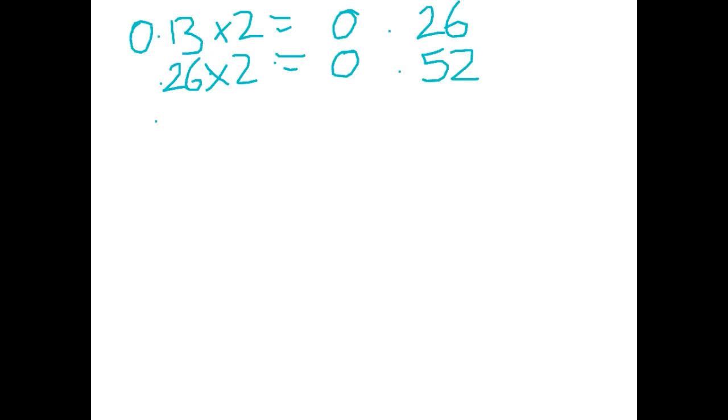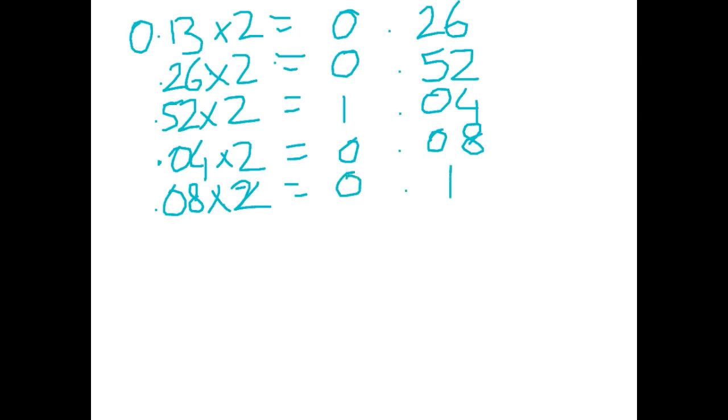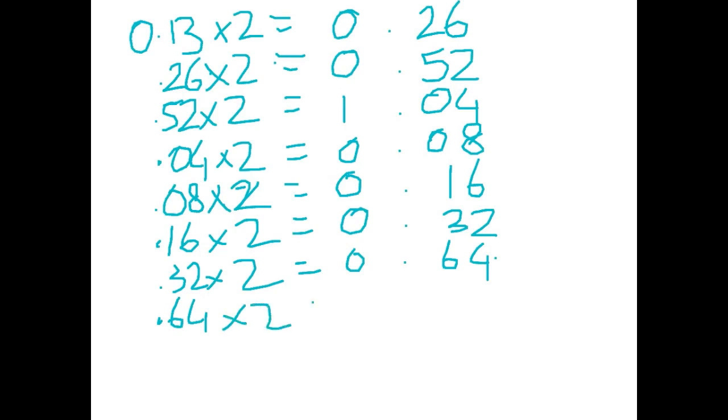0.52 times 2 is equal to 1.04. Then I leave my 1 behind, I take the 0.04, multiply that by 2, and I get 0.08. I take my 0.08, and I multiply it by 2, and I get 0.16. My 0.16 times 2 is equal to 0.32. 0.32 times 2 is equal to 0.64. 0.64 times 2 is equal to 1.28.